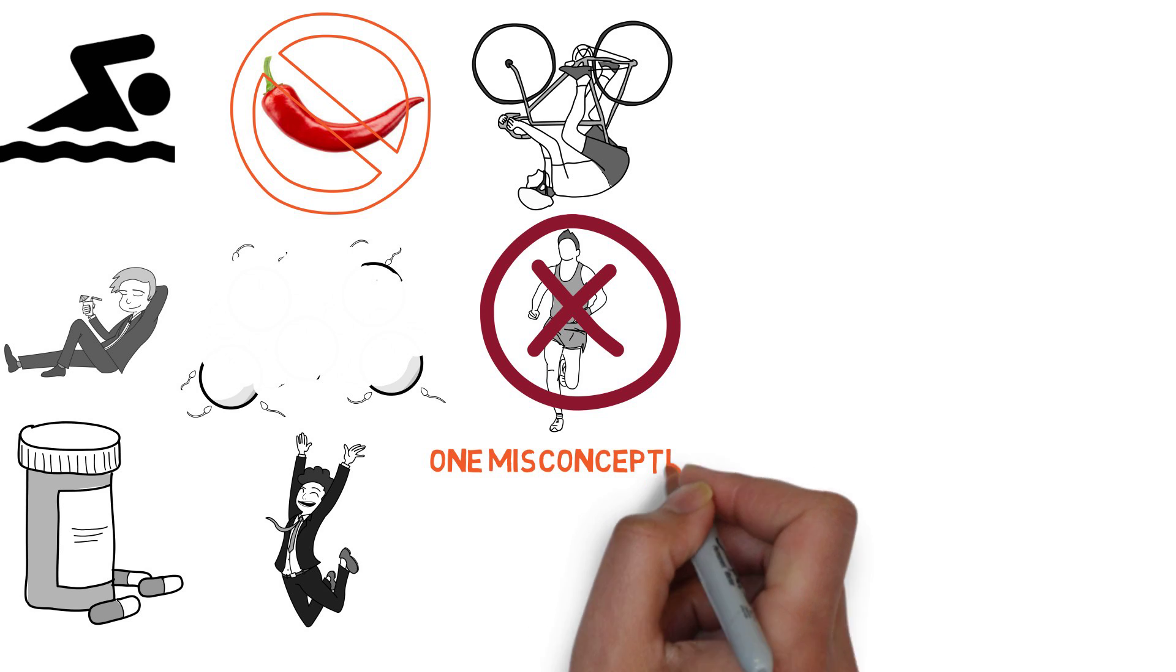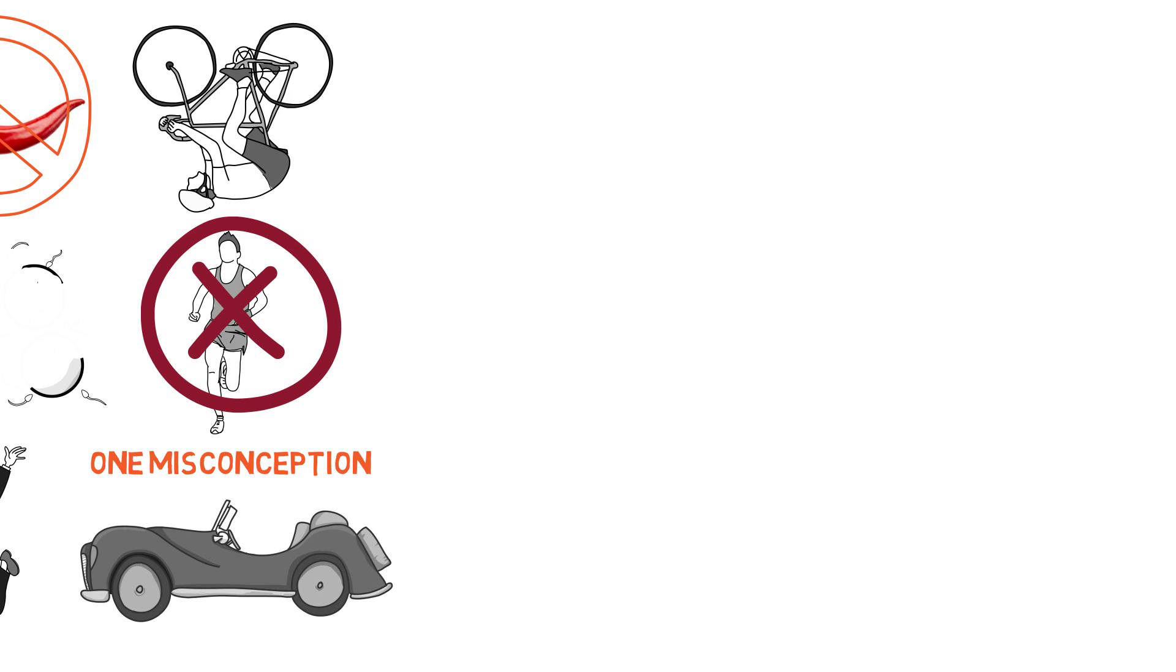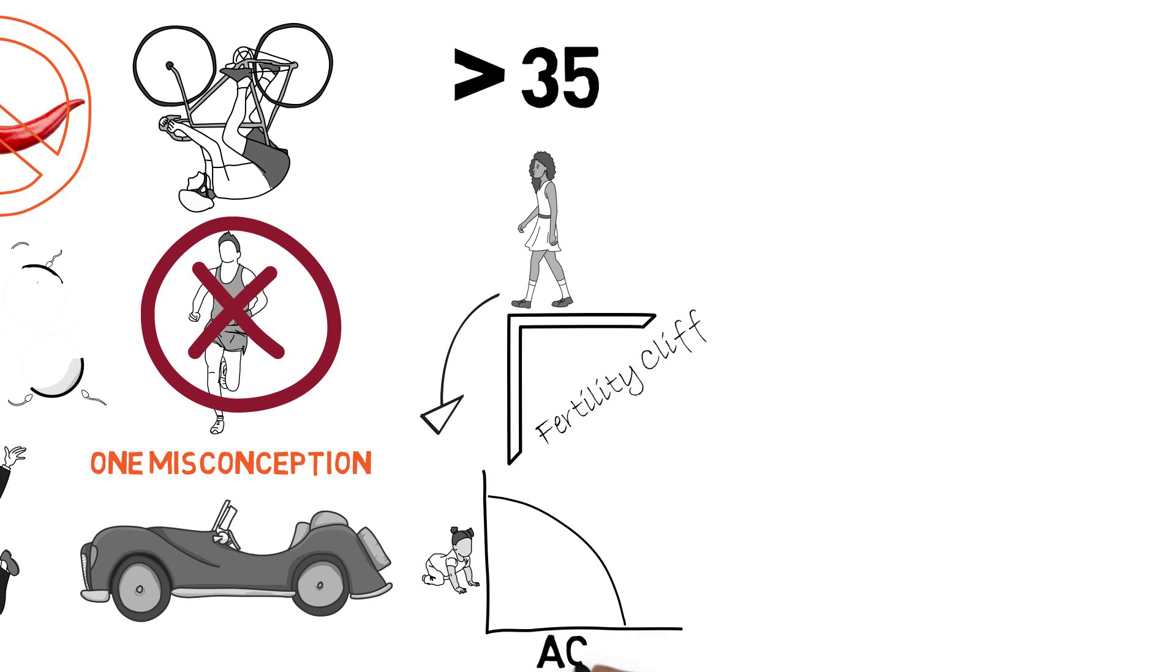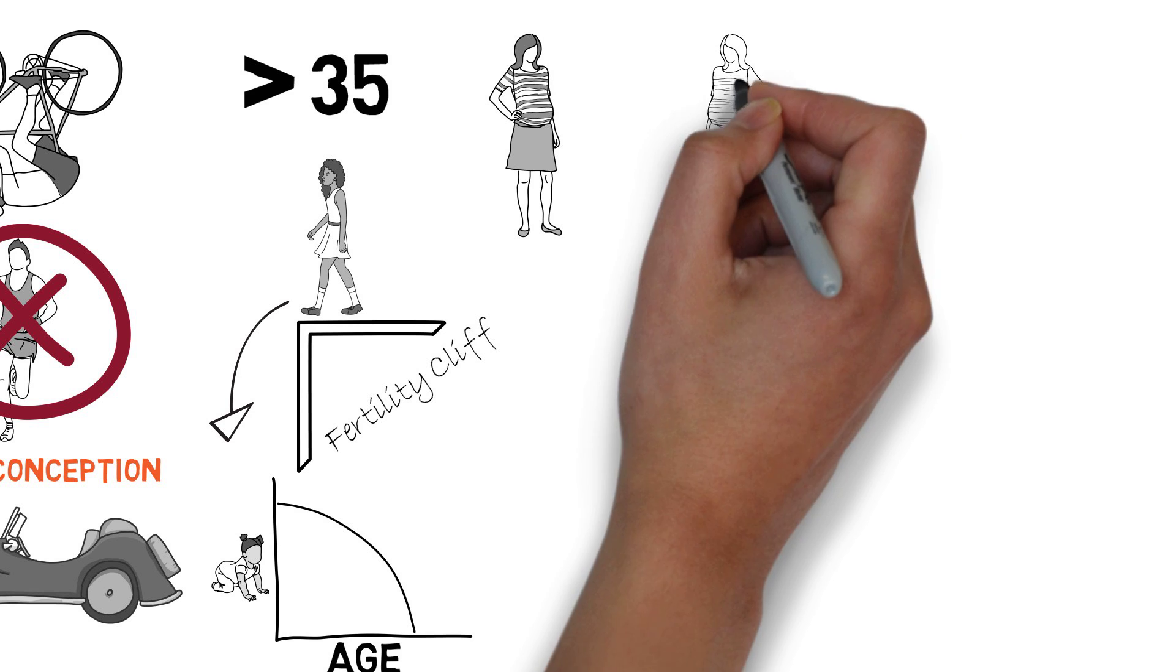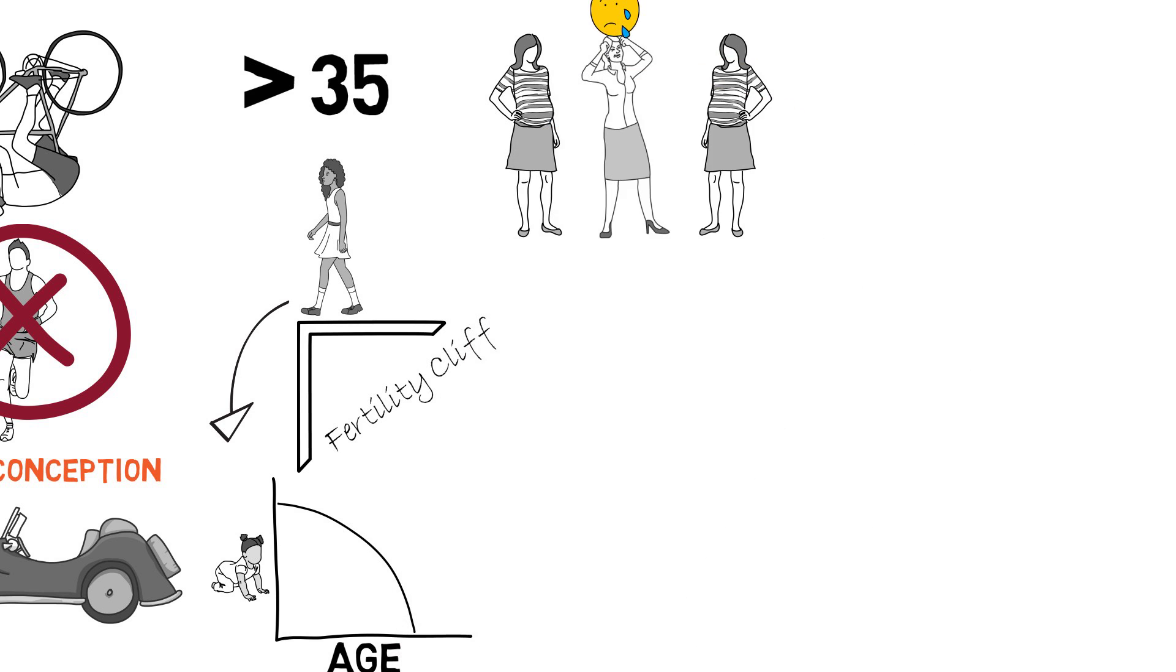And one misconception that I think is driving lots of this is the belief that after 35 you're walking off a cliff. Fertility just drops. This is driven by the stat that 1 out of 3 women who are 35 years old will not get pregnant within a year.